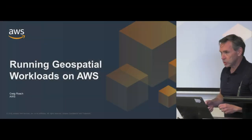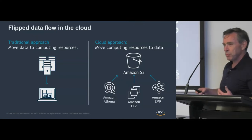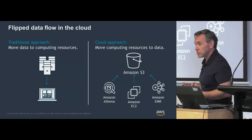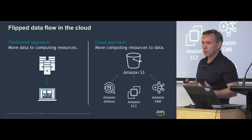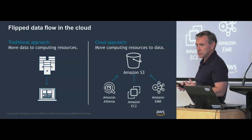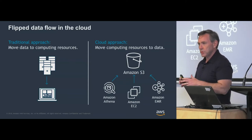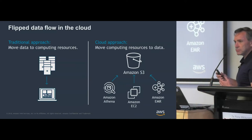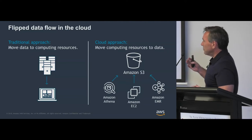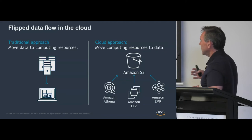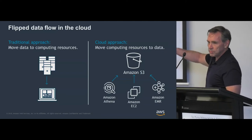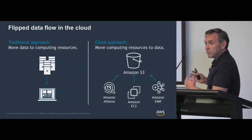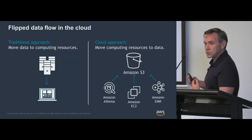What I wanted to talk about first is the difference between running a geospatial workload on the cloud versus on-premises or any other infrastructure. You could stand up virtual machines and provision block storage and everything would look the same, but the cloud gives you the option of flipping that whole infrastructure on its head — instead of bringing data to the compute, you bring the compute to the data. In AWS, that data is represented using S3 object stores.